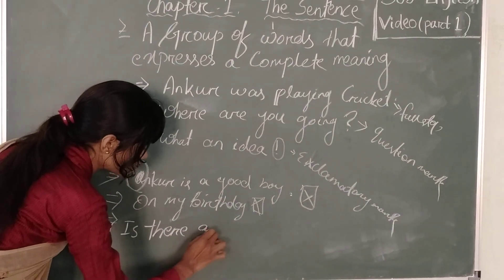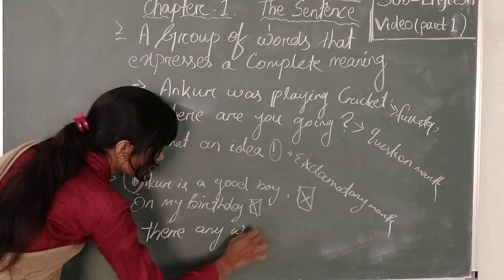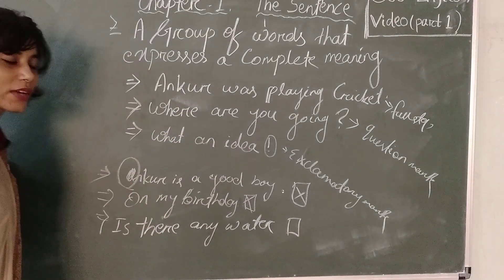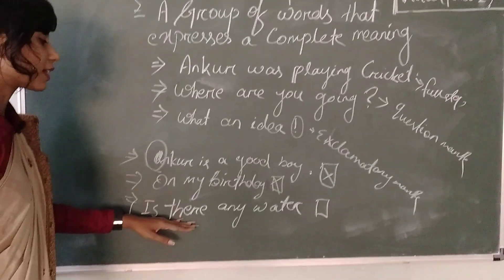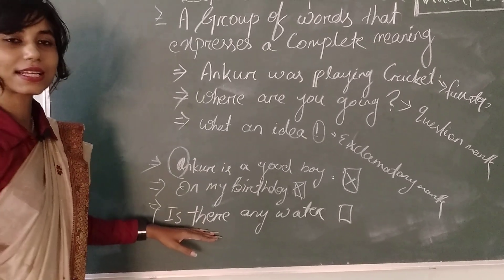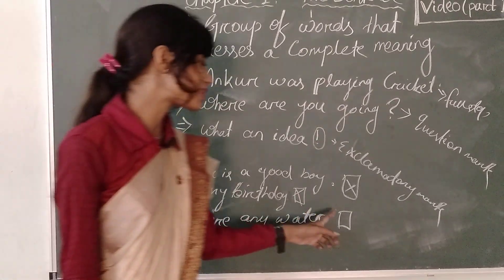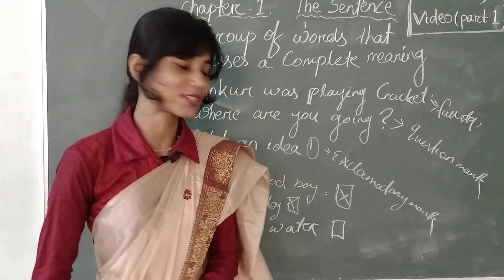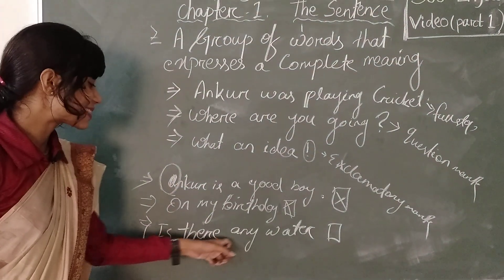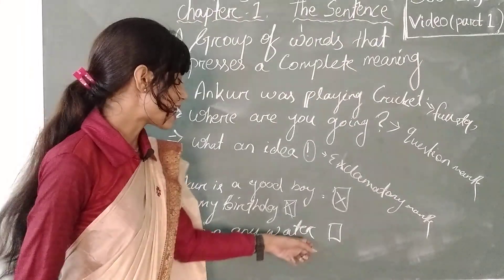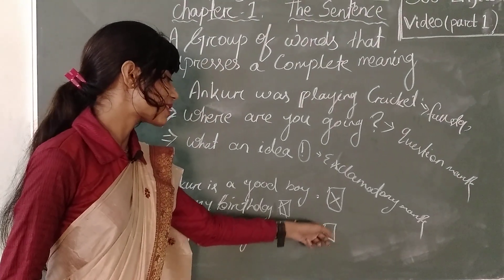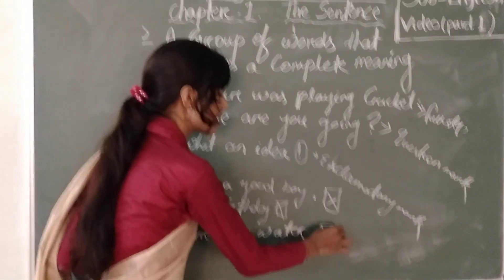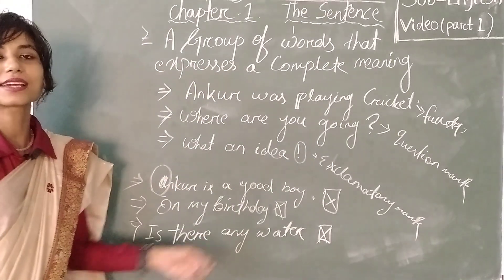I am writing: 'Is there any water.' Can anyone tell me what is wrong in this sentence? I have omitted the sign — which is most important in writing. 'Is there any water' — there is no sign at the end. No sign has been given here. So we can't call it a correct sentence. It is an incorrect sentence.